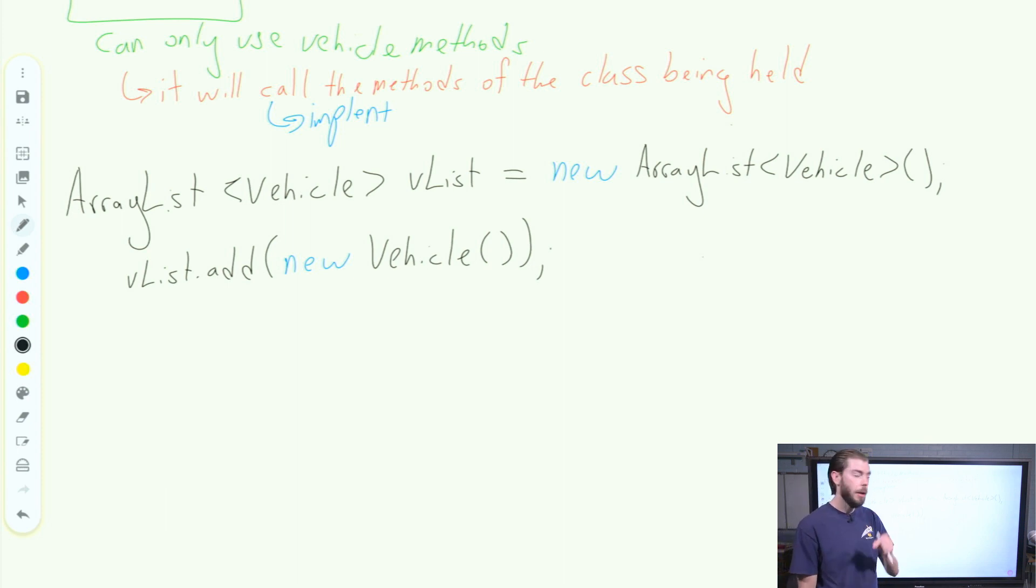Now, because of polymorphism, because I know that anywhere I see a vehicle, I can also place anything that inherits from vehicle, I can now add a car to my VList. So I can now say VList.add new car.